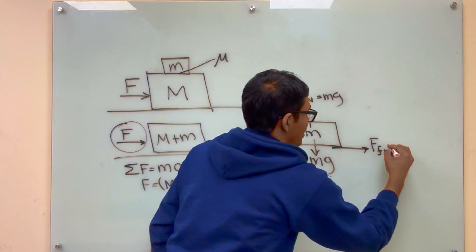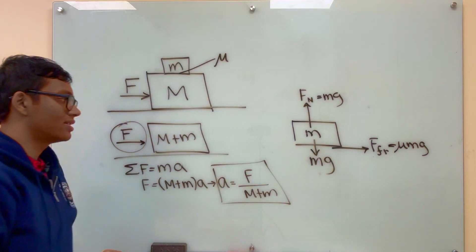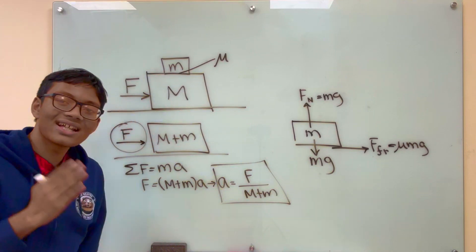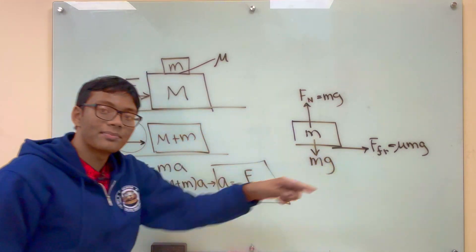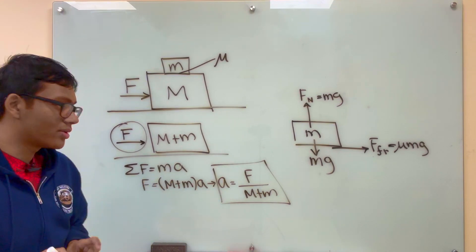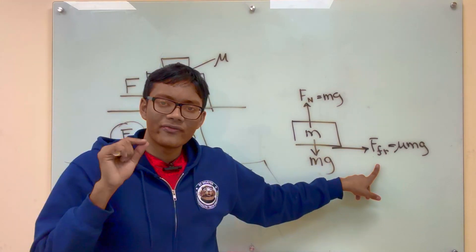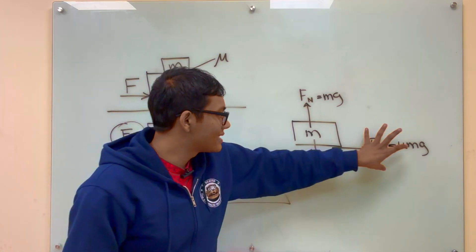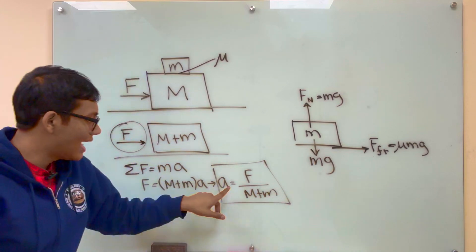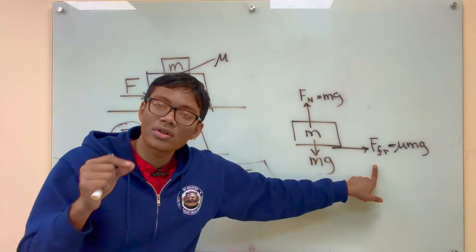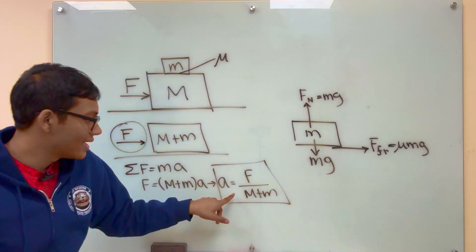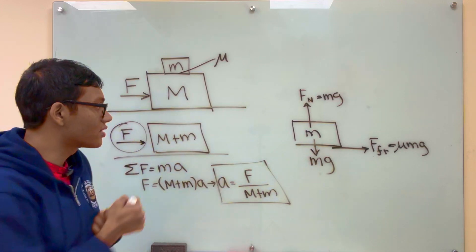So what is our force of friction here? That's just mu mg — it's just mu times the normal force, and the normal force is mg. The condition for the top block to not slip off the bottom block is that this force of friction has to supply at least as much acceleration as the whole system is accelerating. The condition is that the force of friction supplied to the top block has to give the same amount of acceleration as the system's acceleration. If the force of friction can no longer keep up — if it gives the top block a smaller acceleration — then the top block is going to start slipping.